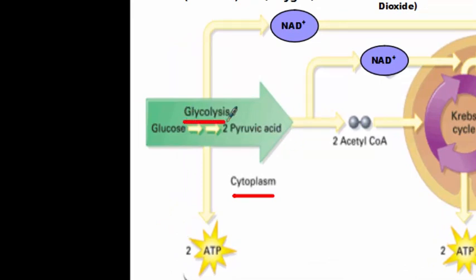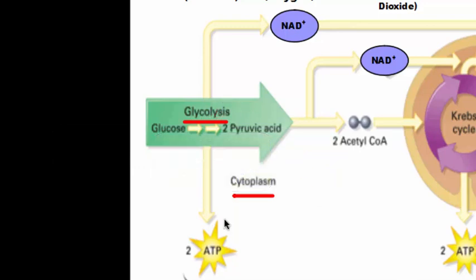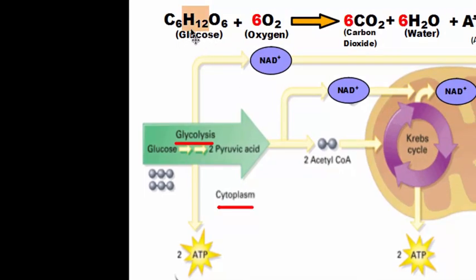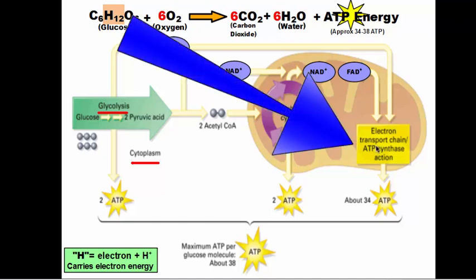The first process is called glycolysis. If you remember, lysis means to split, and glyco means glucose — so this process literally means splitting glucose. Glucose is a six-carbon molecule; each sphere represents a carbon, so there are six of them. To split it, we have to get rid of the hydrogens in the glucose. That is the name of the game of cell respiration — to take as many hydrogens as we can out of the glucose and get them into the electron transport chain, the third part of this whole series.